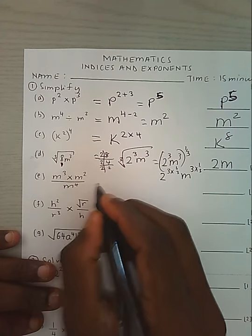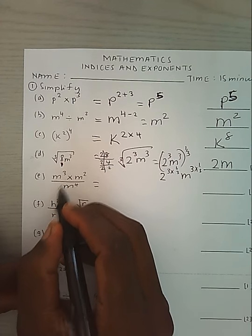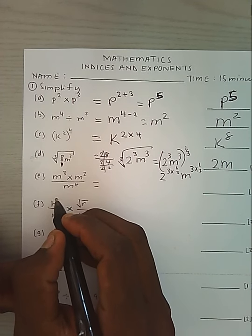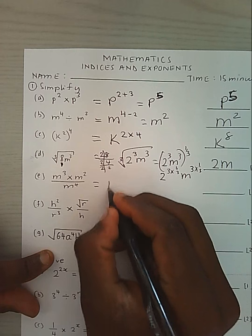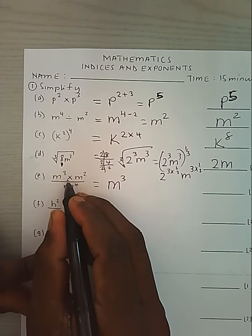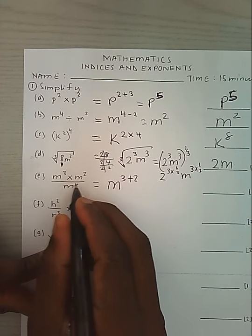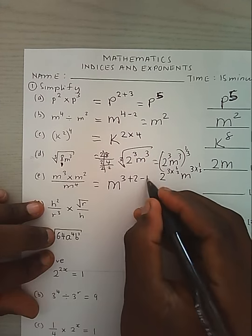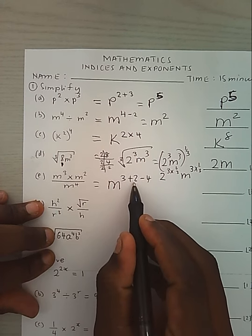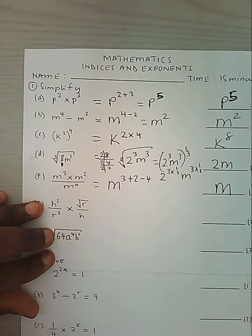Now we look at the next example. The numerator is being subtracted. We obtain that the multiplication will turn into plus, and the division will turn into minus. So 3 plus 2 is 5 minus 4, giving us 1, so we get only M.